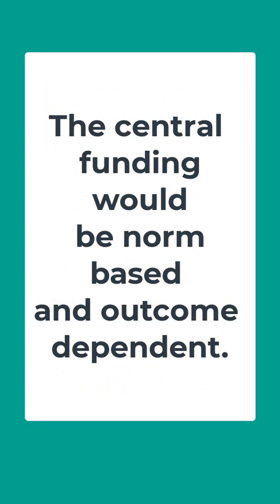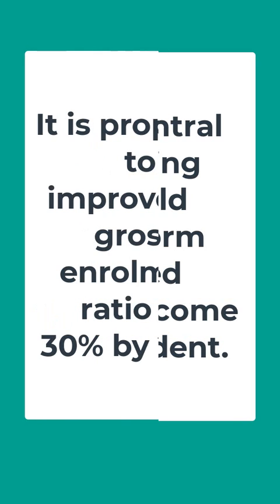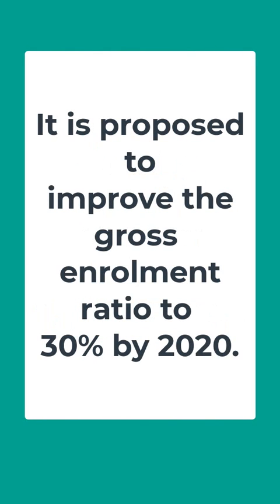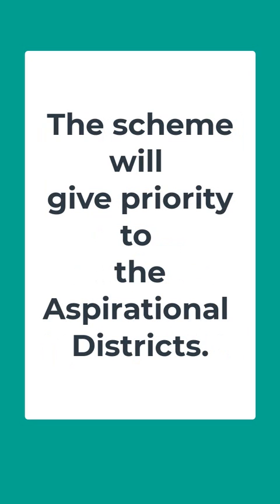Further, the central funding would be norm-based and outcome-dependent. It is proposed to improve the gross enrollment ratio to 30% by the year 2020. The scheme will give priority to aspirational districts.